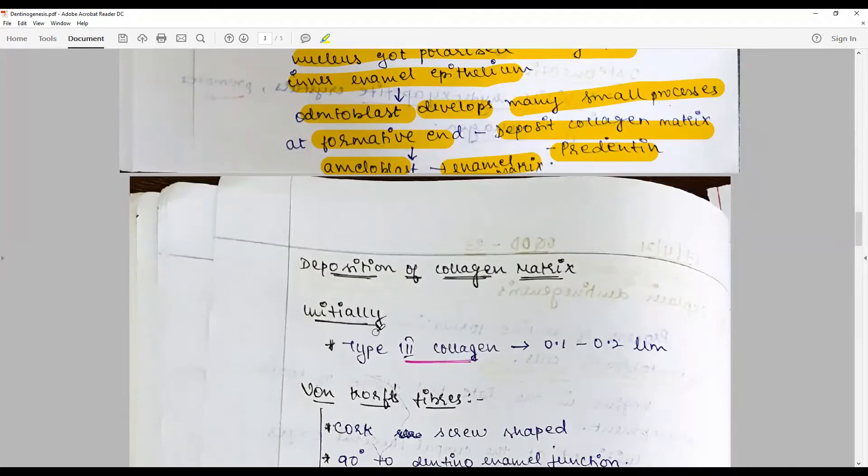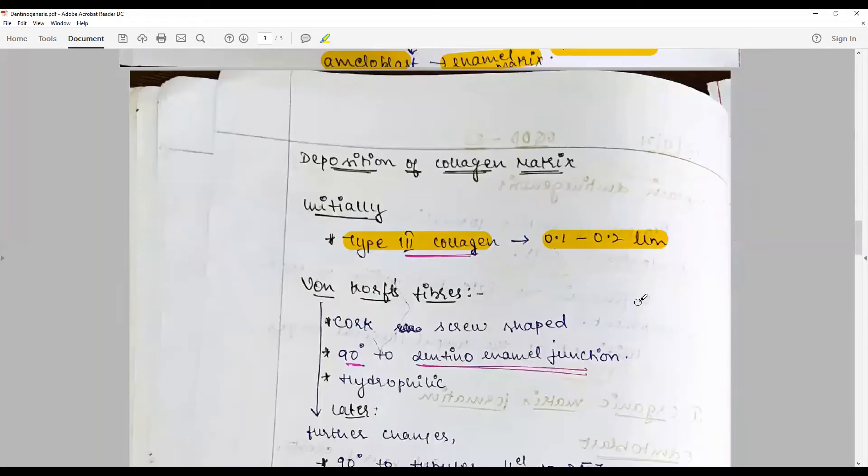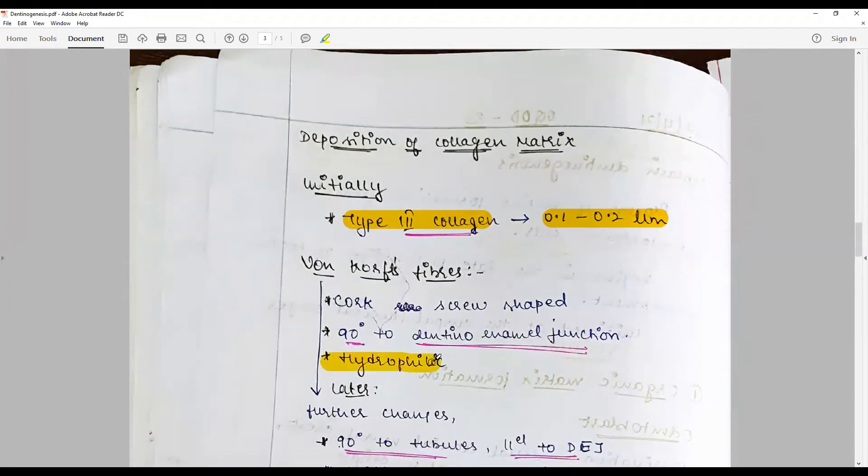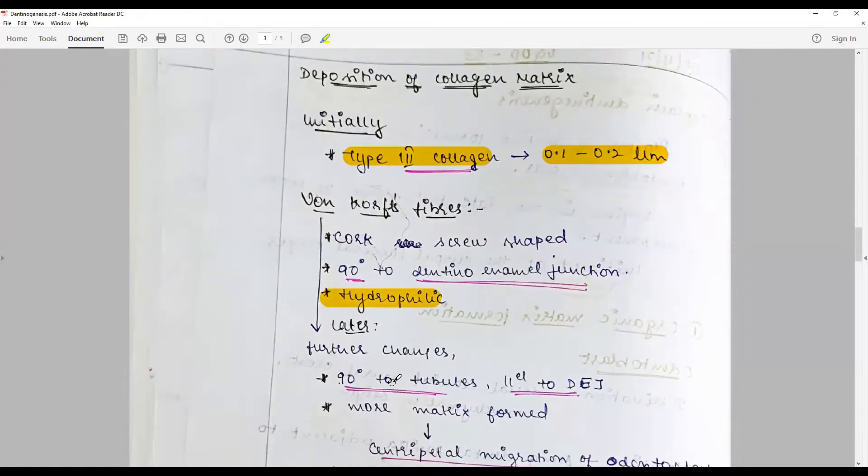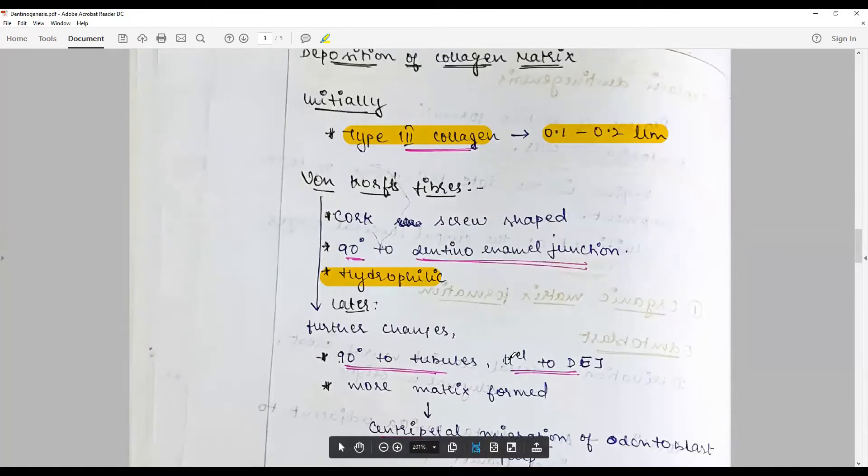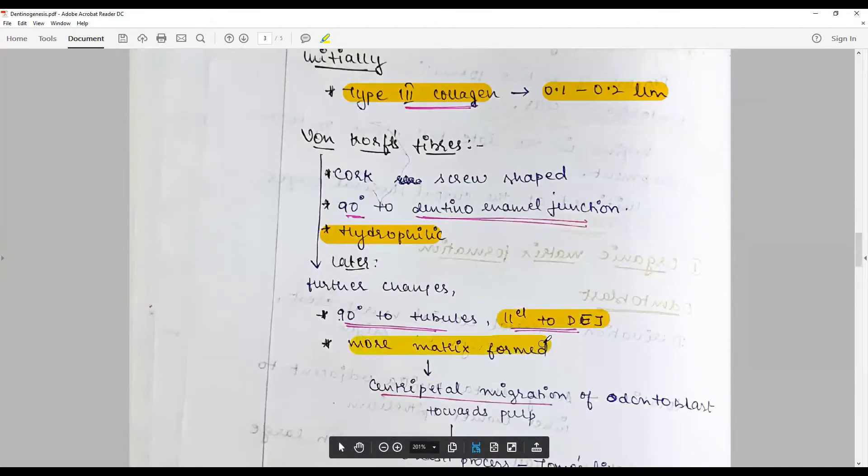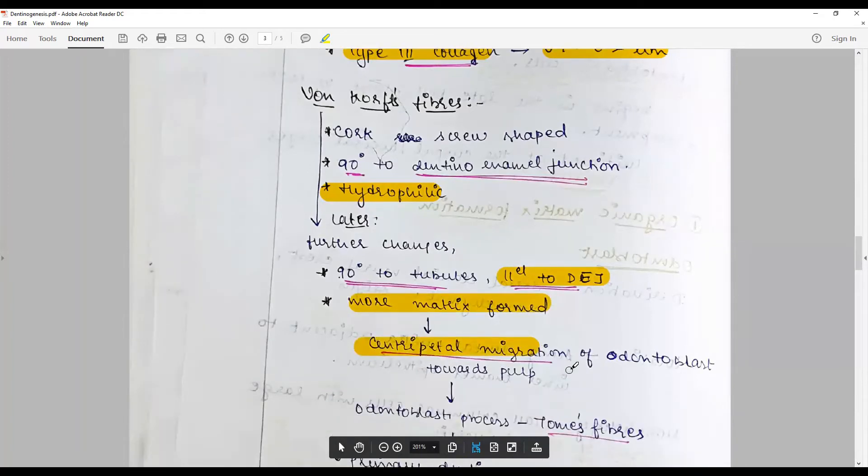Deposition of collagen matrix by the odontoblast initially involves type 3 collagen of about 0.5 to 0.2 micrometers. They are also known as Von Korff fibers, which are corkscrew-shaped and deposited 90 degrees to the DEJ. They are hydrophilic. Later, these Von Korff fibers change their orientation, becoming parallel to the DEJ. More matrix is formed with centripetal migration of odontoblasts towards the pulp, paving way for the formation of Tomes' fibers.